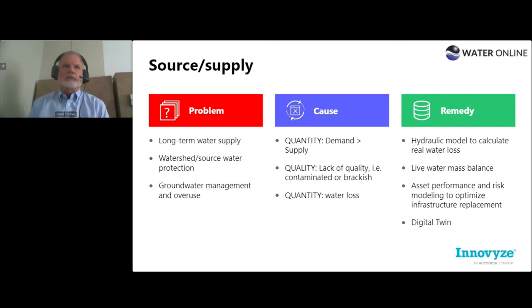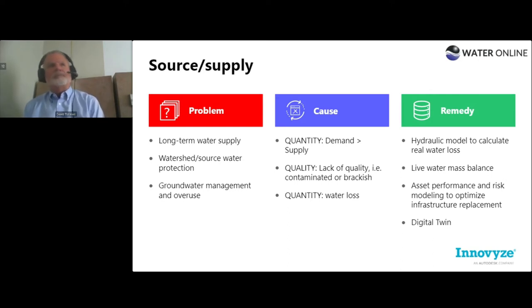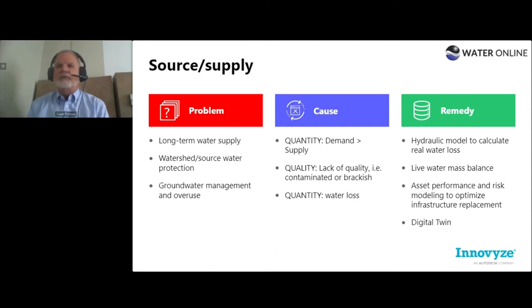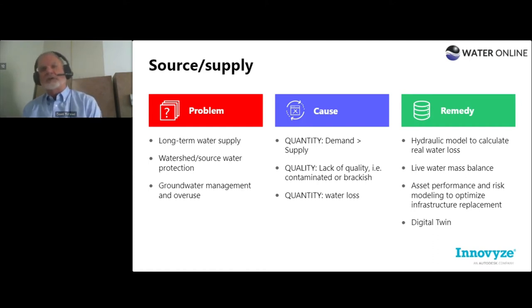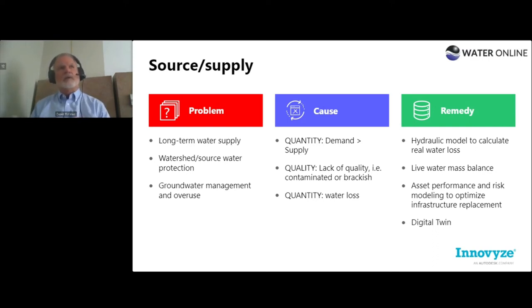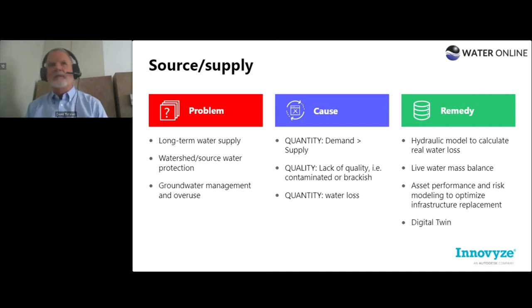Getting water to the customer goes through a complex network. We look at having live water mass balance equations in a dashboard — understanding the movement of water, what's going in, what's going out. If you use the math and science of what was designed for the pipe network, and reality via sensors or flow meters doesn't match what the math should say, you have a water mass imbalance. A water mass balance dashboard is a great tool to understand daily performance.